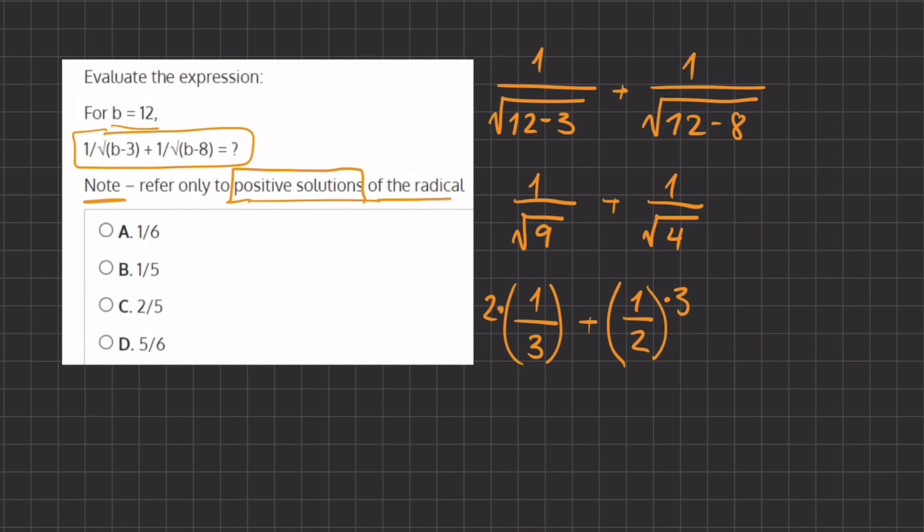Alright, so if we do so, we have 2 divided by 6 plus 3 divided by 6. Alright, so now that we have a common denominator, we can add these two fractions together. And we have 2 plus 3, which gives us 5, divided by 6.